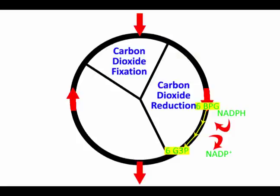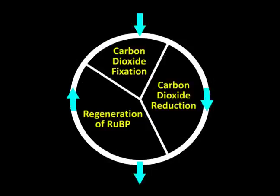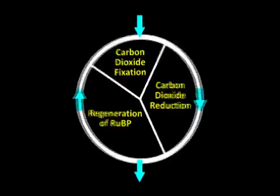This is because it takes three cycles to allow one G3P to exit. This occurs because five of six G3P molecules made in three cycles are used to regenerate three RuBP molecules during the last reaction with the help of three ATP molecules. These reactions will cease after no light is available for the light dependent reactions.